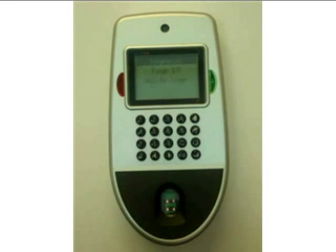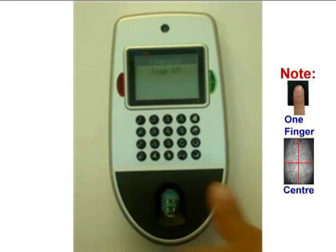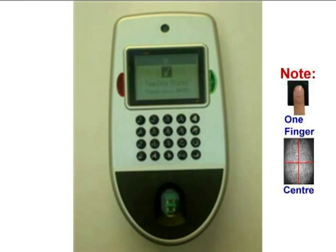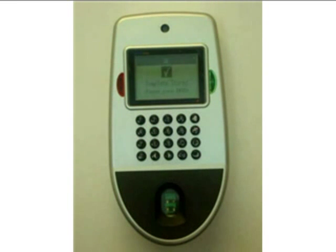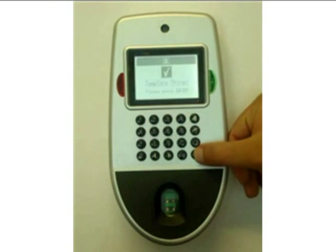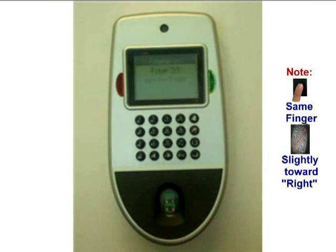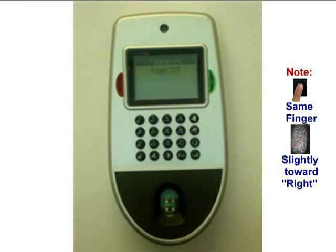Now ActiveTech is asking for the first fingerprint template. We will ask the user to put their thumb at a 90-degree angle on the fingerprint reader. After capturing the template, ActiveTech will ask you to press enter and register the second copy of the fingerprint template. So we will press enter and this time we will put our thumb slightly towards the right.